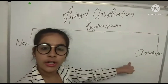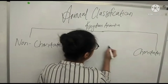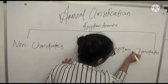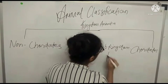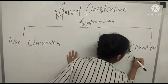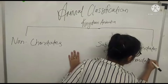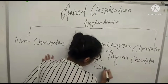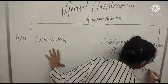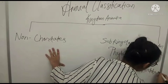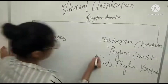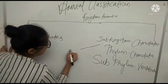We are going to deal with caudates today and this is the sub-kingdom caudates. Their phylum is Chordata and their sub-phylum is Vertebrata. There are 6 classes in this caudates and we are going to deal with it today. I am going to write here 6 classes.